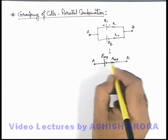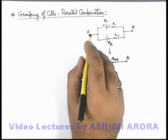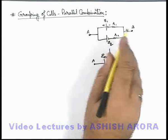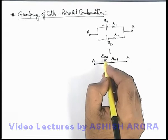This will be an r_equivalent and this will be e_equivalent connected across the terminal A and B. This equivalent battery is such that the open circuit potential difference across terminals A and B must be equal to e_equivalent.